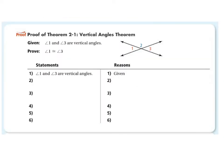We're going to prove that angle one is congruent to angle three. We're given that angle one and angle three are vertical angles. That becomes the first statement we make — we know that angle one and angle three are vertical angles because that was given to us, and that is the first thing we restate.